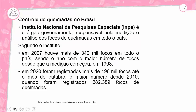Controle de queimadas no Brasil. O Instituto Nacional de Pesquisas Espaciais — INPE — é o órgão governamental responsável pela medição e análise dos focos de queimadas em todo o país. Em 2007 houve mais de 340 mil focos, o maior número desde que a medição começou em 1998. Em 2020 foram registrados mais de 198 mil focos até outubro, o maior número desde 2010, quando foram registrados 282.389 focos. Esta informação é do Brasil Escola, Geografia sobre queimadas.